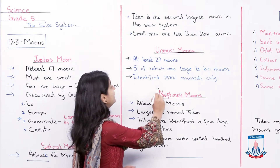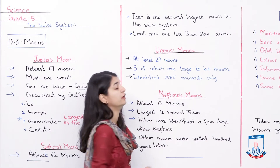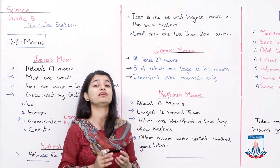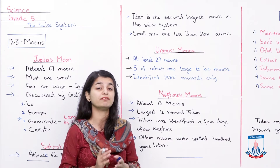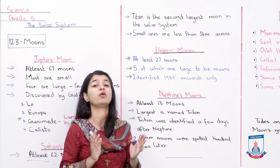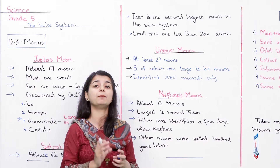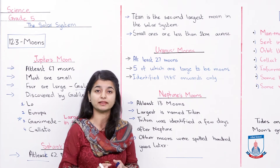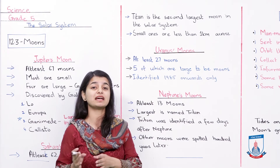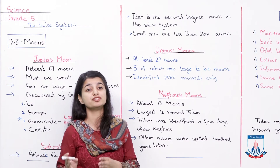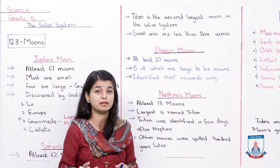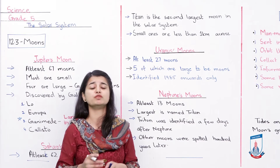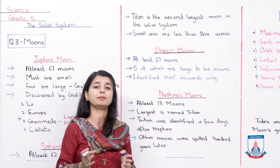Uranus ke moons identified 1985 onwards only. Jo inke moons hain, woh zyadha ter mile hain 1985 ke baad. Uski wajah ye hai ki Uranus jo hai Earth se bohot zyadha door hai, toh uski wajah se hum bohot mushkil se uske moons ko identify kar paate hain. Ihi wajah se baaki sare planets ke moons kaafi saal pehle mil chuke thay, kuch 100 years pehle bhi, lekin Uranus ki jo moons hain woha abhi sirf 1985 mein mile, which was less than 30 years ago.